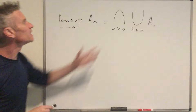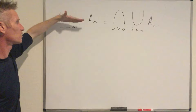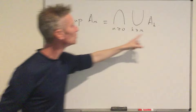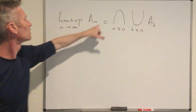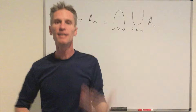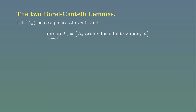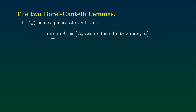Beyond this set notation, you have some intuition of what the lim sup is. If the lim sup occurs — and this is again an event — reading the right-hand side expression: saying that the lim sup occurs means exactly that for all n, there exists k larger than n such that A_k occurs. That means exactly that A_n occurs for infinitely many n. So the key thing to have in mind is that the lim sup of a sequence of events A_n is exactly equal to the event that A_n occurs for infinitely many n.